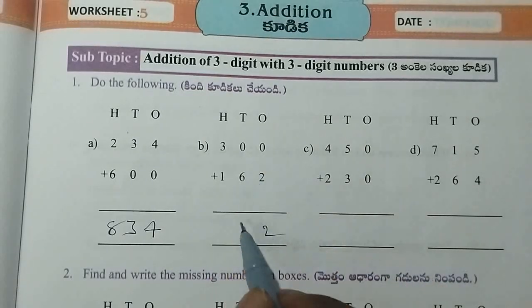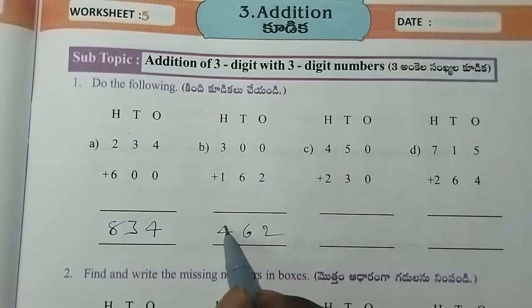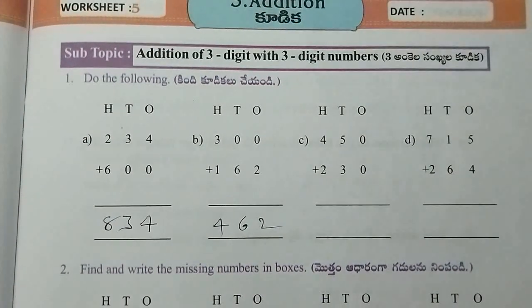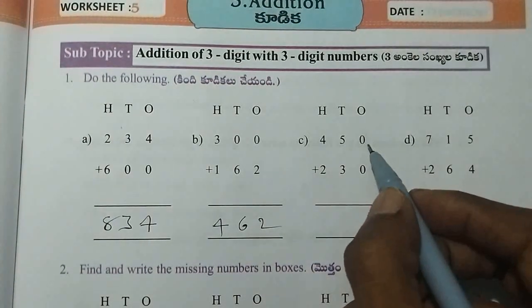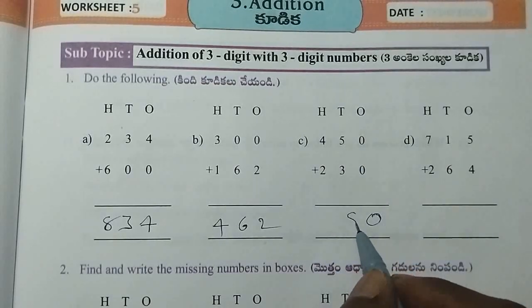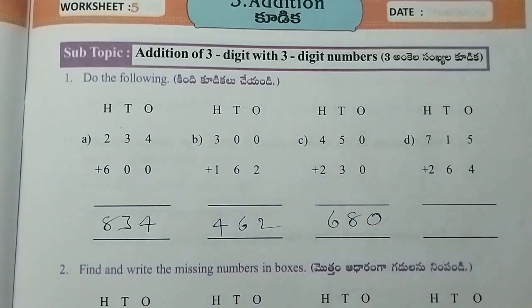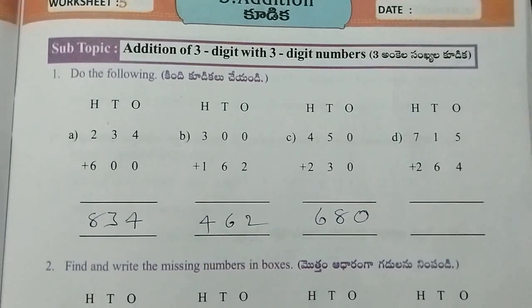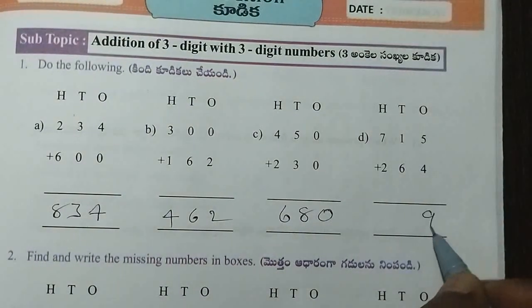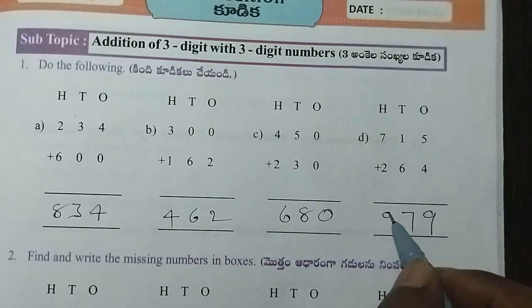20, 21. 20. 3 plus 1, 4. Next, 0 plus 0, 0. 5 plus 3, 8. 4 plus 2, 6. Next, 5 plus 4, 9. 1 plus 6, 7. 7 plus 9.